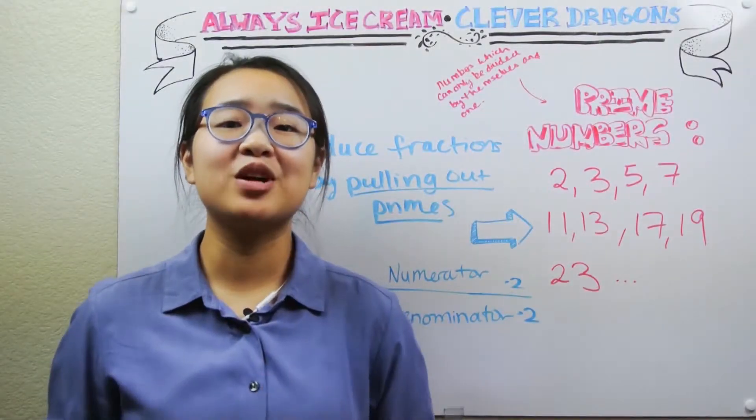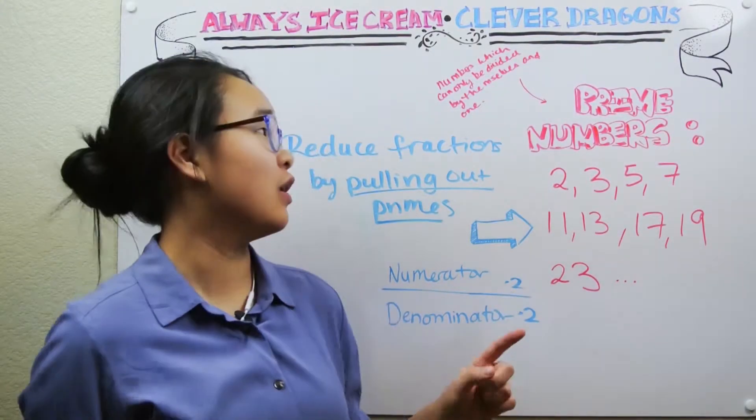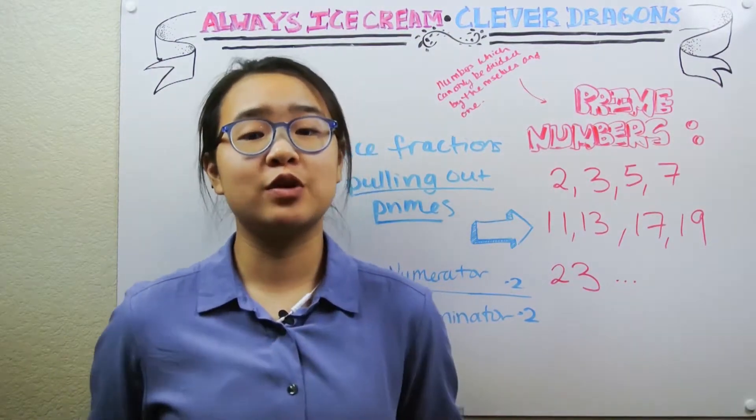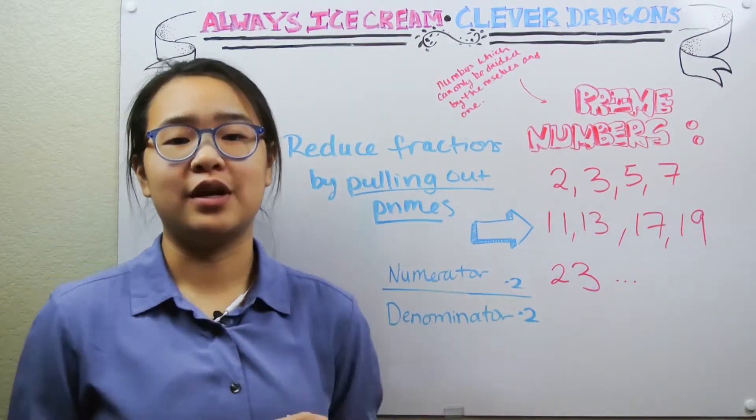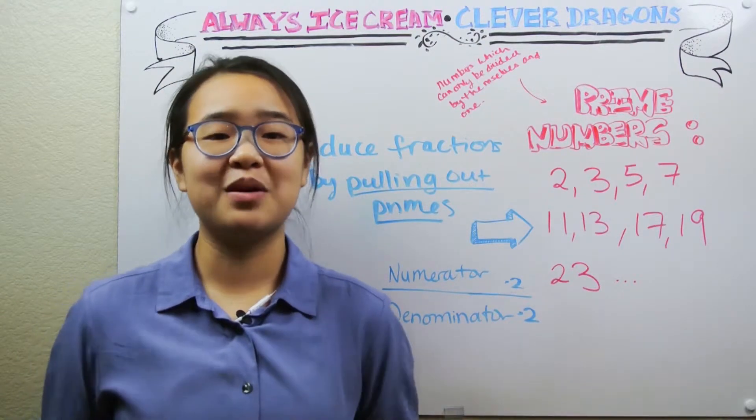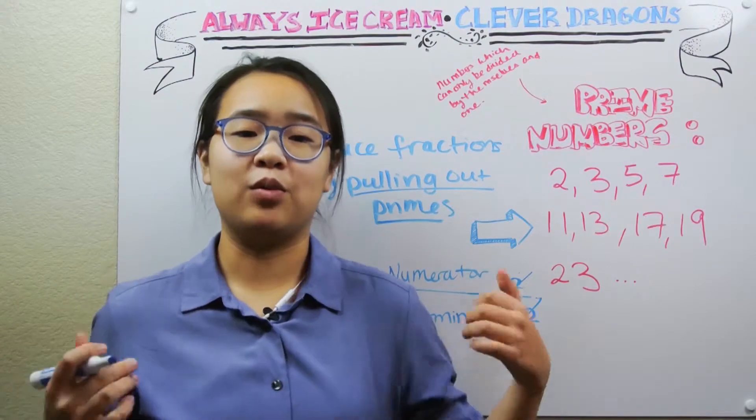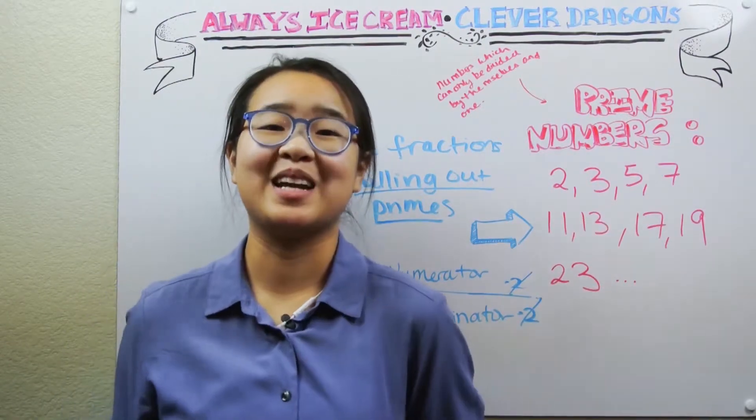So a prime number is a whole number greater than one, which can only be divided evenly by one and itself. What we do is we try to divide the numerator and the denominator separately by the same prime number, starting with the smallest prime number and working our way upwards until no more prime numbers can come out.